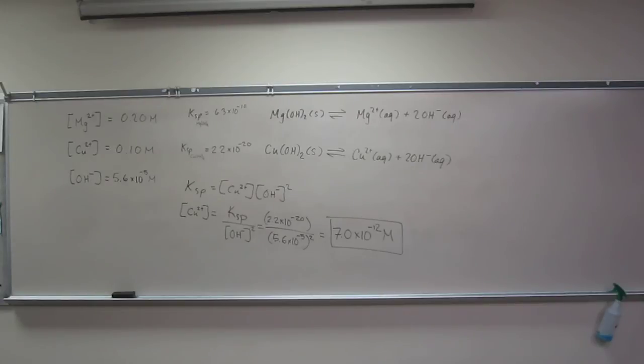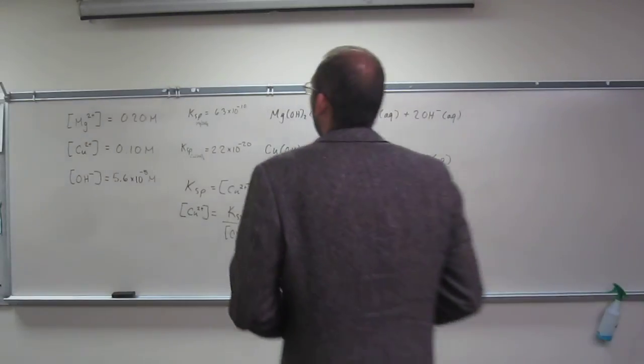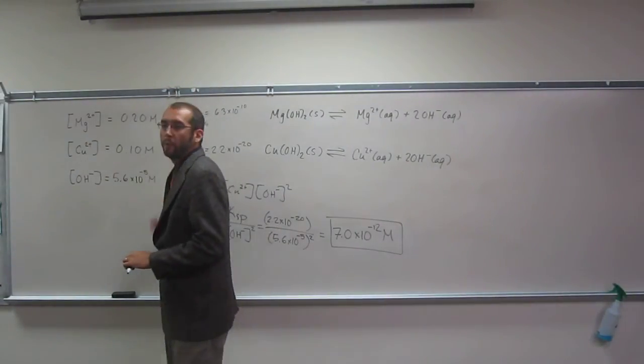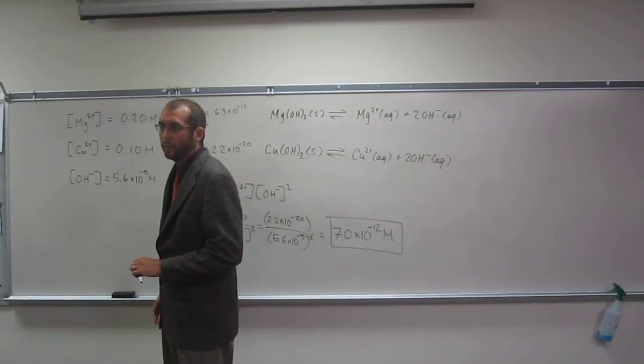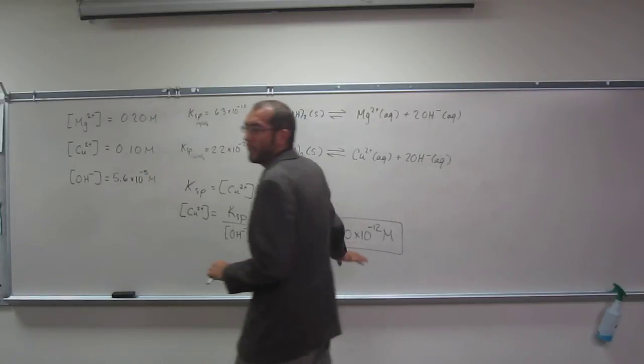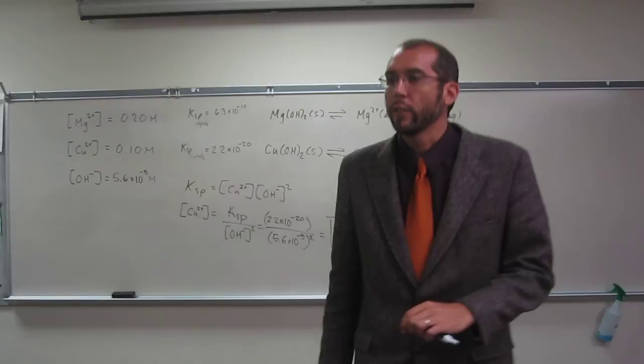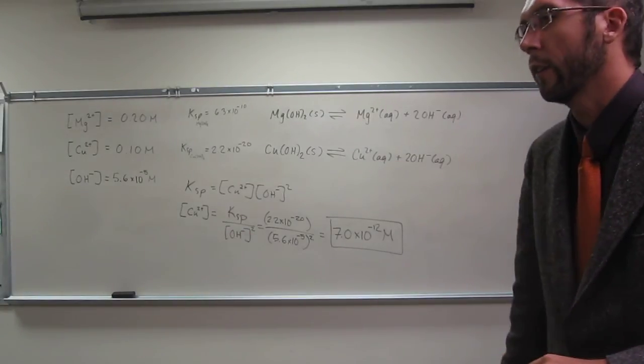Why didn't we use the concentration of copper in the beginning? Well, you could have made an ICE table and done the same thing if you wanted to. This is an easy way of doing it though. It's selective precipitation, so you can do it this way.